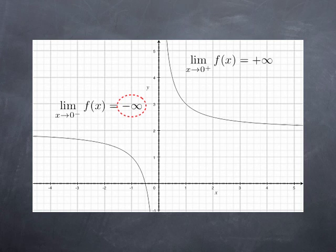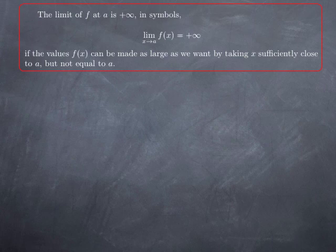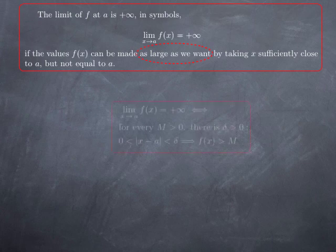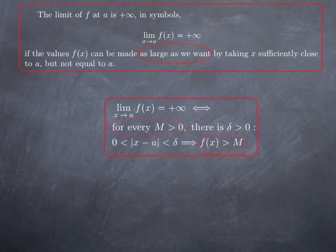Let's turn to more formal definitions of these symbols. The limit of a function at a is positive infinity if the values f of x can be made as large as we want by taking x sufficiently close to a, but not equal to a — very similar to the definition we gave for the regular limit. More formally, 'as large as we want' means that for any positive M, we can make f of x larger than this value — larger than any number we fix. And how do we do that? By taking x sufficiently close to a, but not equal to a — in other words, by making x within a certain distance of a, but not equal to a.